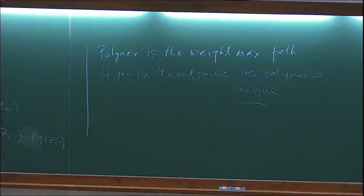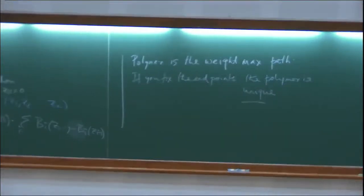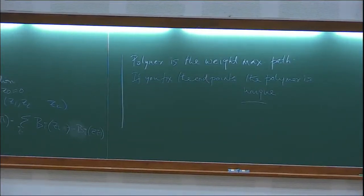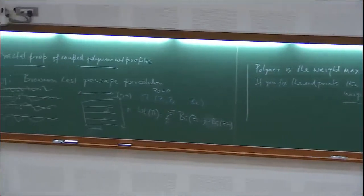So the endpoints were origin and N,N. In principle I could take any two points in this space and find all paths going between them and find the one maximizing the weight. If I fix the two endpoints deterministically, the polymer is unique, but there could be random points in the space where there are multiple polymers. Understanding what that set looks like is what this talk will try to address.